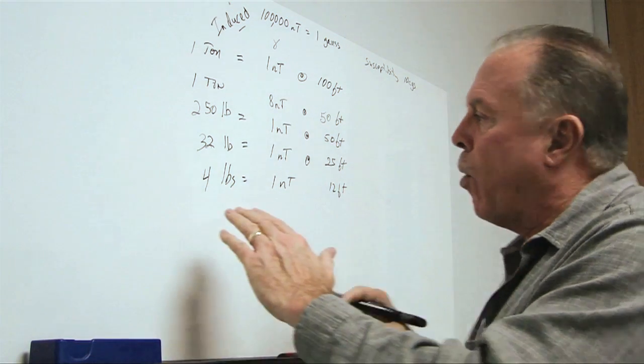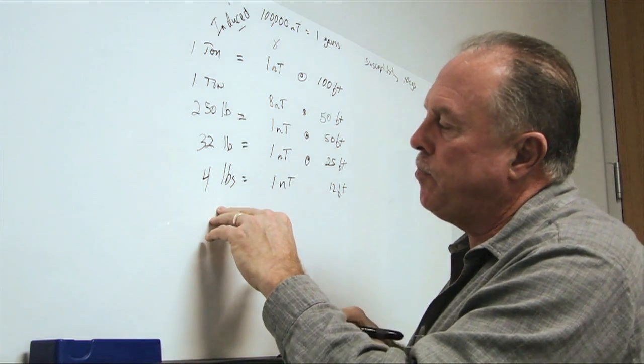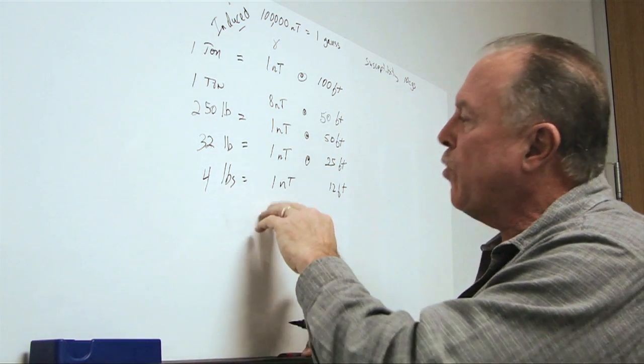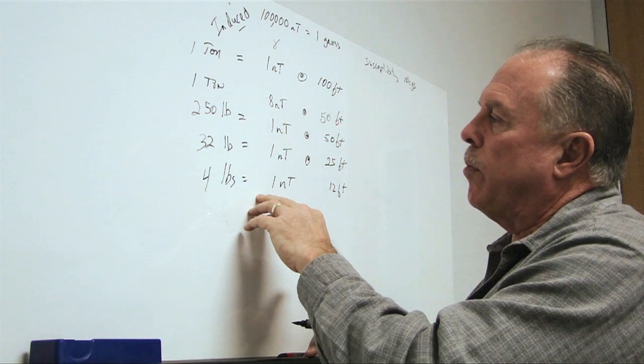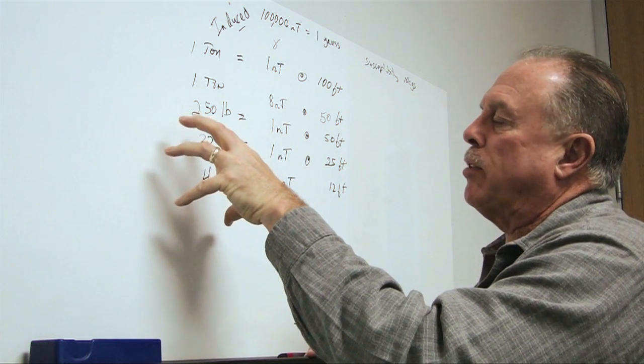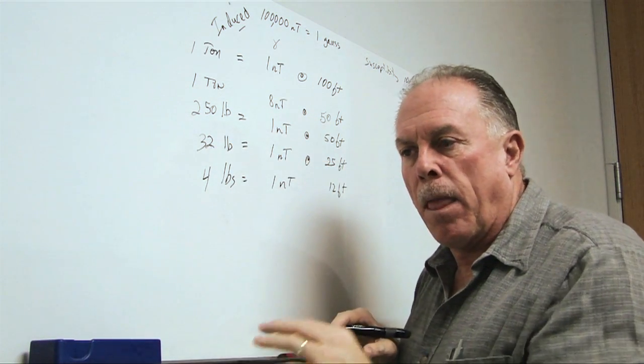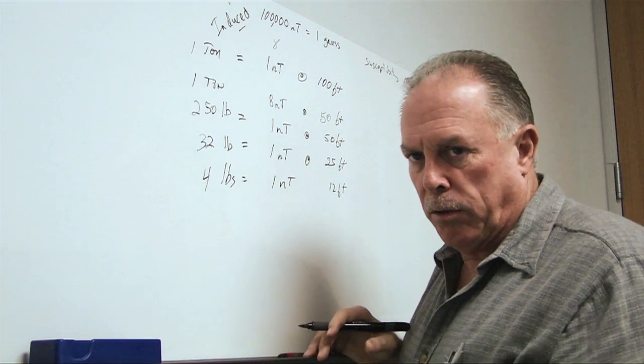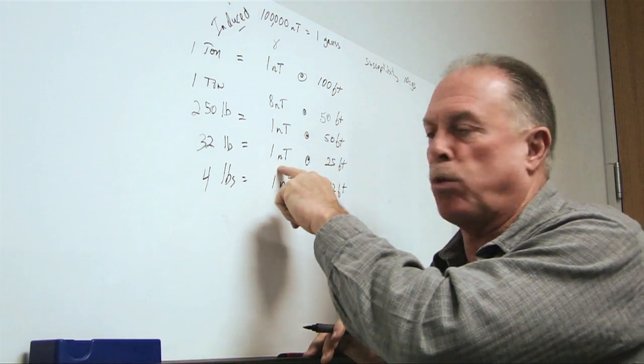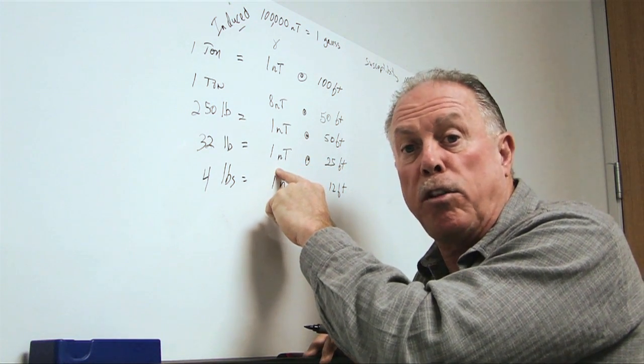So, the point I want to make here is that induced fields give us the ability to see objects perhaps at, let's say, 30 pounds at 25 feet. But, the permanent fields can amplify this response by a factor of 3 to 5 or more.